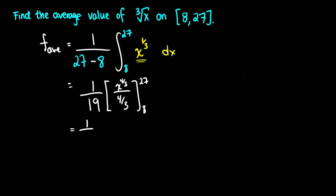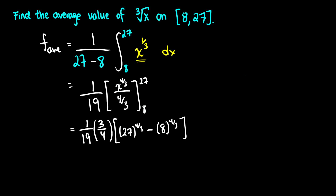Now we can simplify. We have 1 over 19, and we pull the four-thirds on the bottom out, which is the same thing as multiplying by three-fourths. Now we evaluate: 27 to the four-thirds minus 8 to the four-thirds. 27 to the four-thirds is the same as 3 to the fourth, which is 81. And 8 to the four-thirds is the same as 2 to the fourth, which is 16.